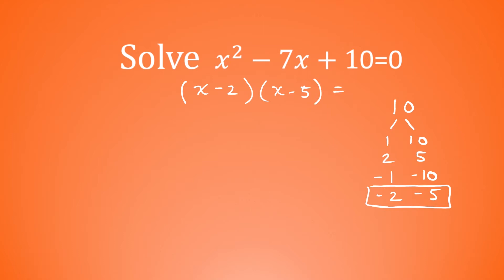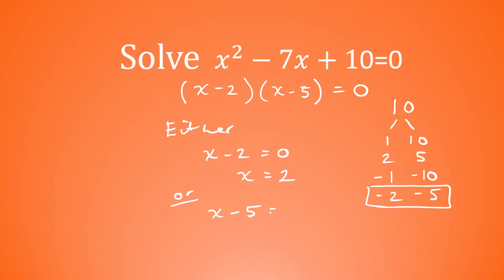That is equal to 0. So either x minus 2 is equal to 0 — if we add 2 to both sides, that tells us x is equal to 2. Or our second solution, x minus 5 is equal to 0, in which case x must be equal to 5. Those are our two solutions: x is equal to 2 or x is equal to 5.